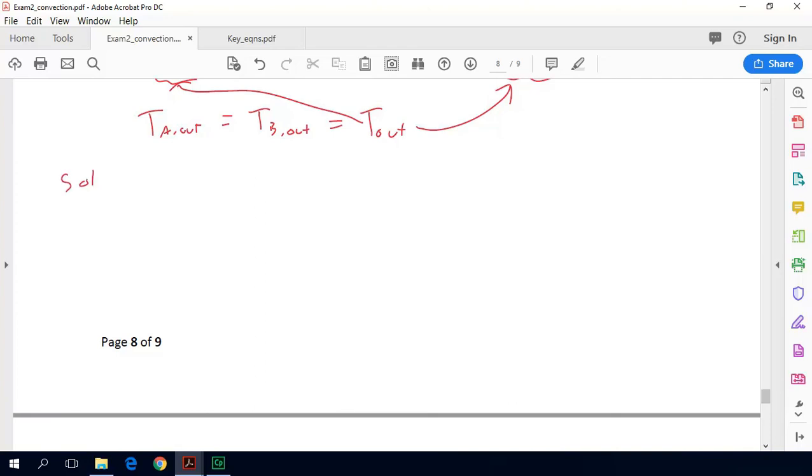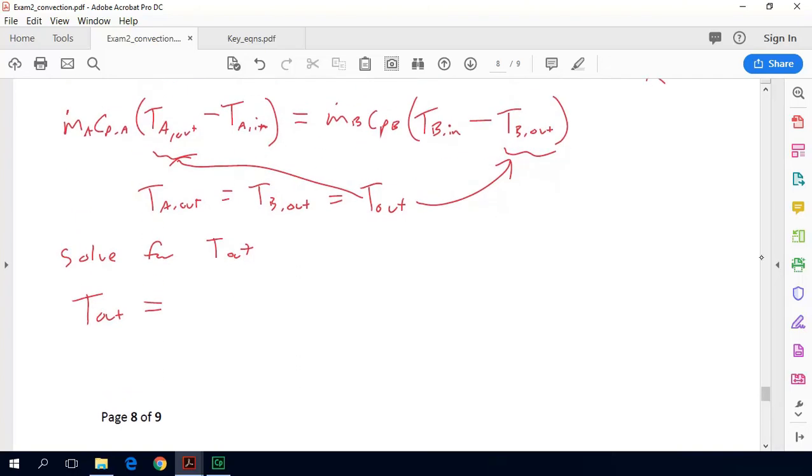So we can solve for T out. So T out is equal to, and I'm just going to do this, I'm going to skip some algebraic steps here. T out is equal to M dot A times CP A multiplied by T A in plus M dot B times CP B multiplied by T B in, divided by M dot A times CP A plus M dot B times CP B. So pretty easy, and that gives us our outlet temperature T out, which is also equal to T A out, which is what the problem was initially asking for. That comes out to be 175.6 degrees Celsius.